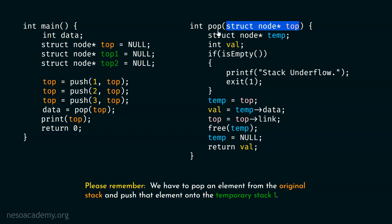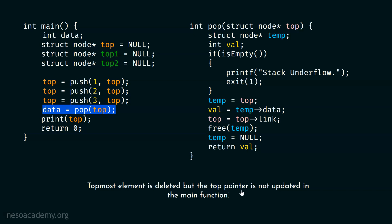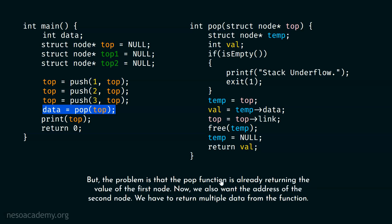This top pointer is local to the function, and now we can see that our pop function is updated. After returning the value, we will receive it in the data variable — that is the value 3. The top most element is deleted, but the top pointer is not updated in the main function. We have to update this top pointer also. This is the same problem we were facing in the push function. It is important to return the top pointer from this function, but the pop function is already returning the value of the first node.